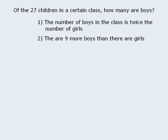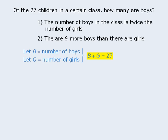So let's practice summarizing information. In this example, we are told that there are 27 students in a class and some are boys. Let's let B equal the number of boys in the class. And since each child will be either a boy or a girl, let's let G equal the number of girls. We are told that there are 27 children in total, so we can write B plus G equals 27. Finally, the target question asks us to determine the number of boys. Now that we have summarized all of the information, we can examine the statements.